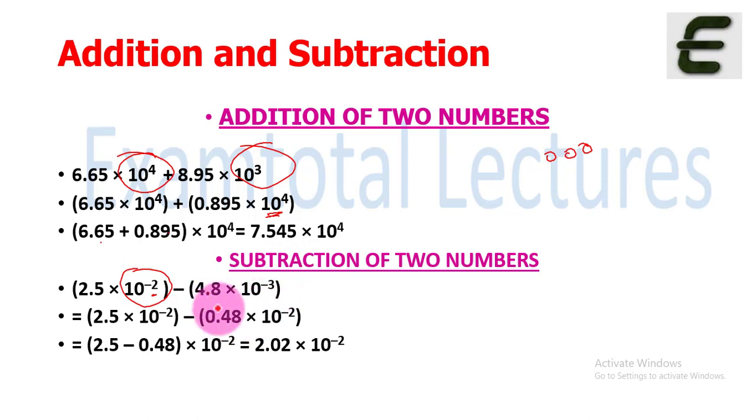Similarly for subtraction, you have two numbers and you have to make the exponents the same. For example, make it 0.48 times 10 raised to power minus 2. Then you can easily subtract the two numbers: 2.5 minus 0.48 times 10 raised to power minus 2, which equals 2.02 times 10 raised to power minus 2.